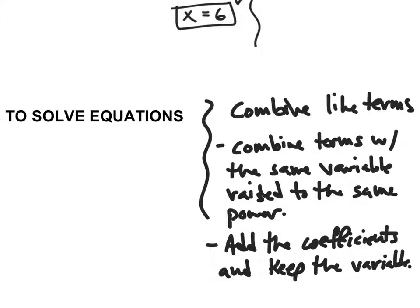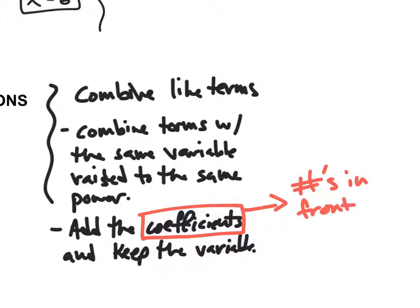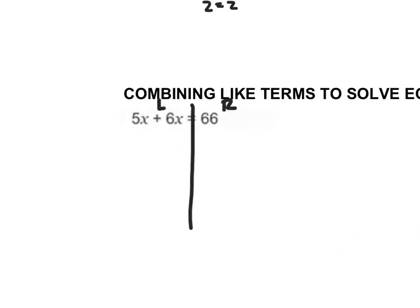One way to combine like terms is to add the coefficients and keep the variable. The coefficients are the numbers in front of the variable — you're going to see that word a lot. In this case, I want to combine 5x and 6x. Because they both contain an x, these are like terms. I add the numbers in front: 5 plus 6 gives me 11, keep the variable, so 11x.